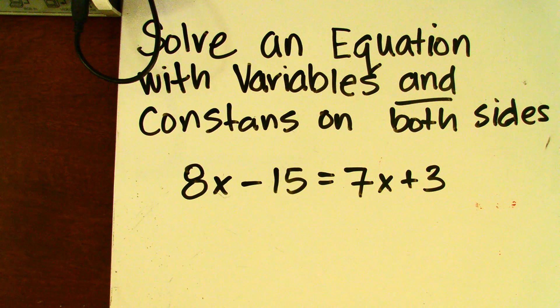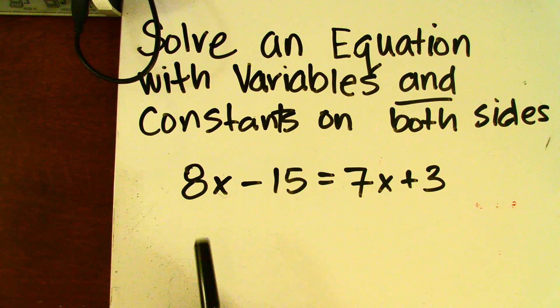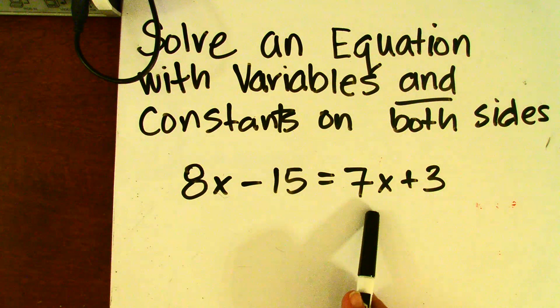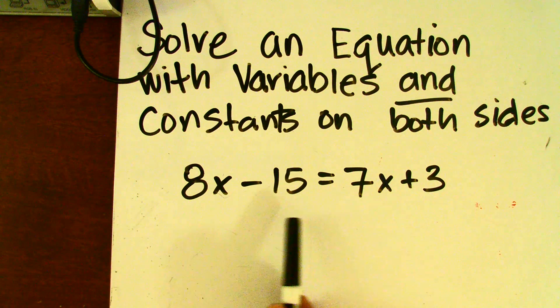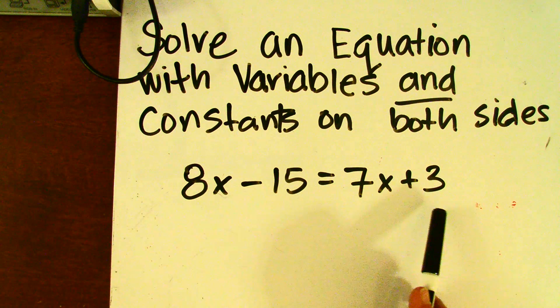In this last example, I'm going to solve an equation with variables and constants on both sides of the equal sign. Here we have 8x minus 15 equals 7x plus 3. My variables are 8x and 7x, and my constants are 15 and 3.